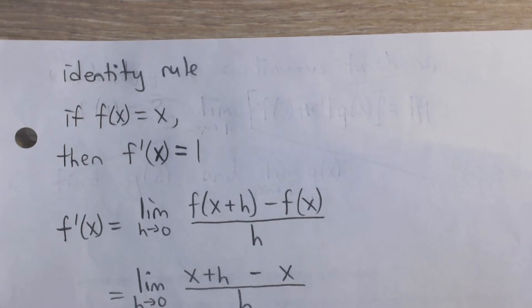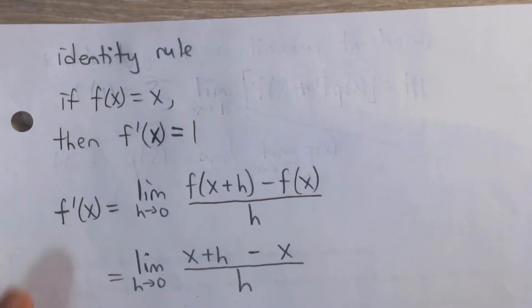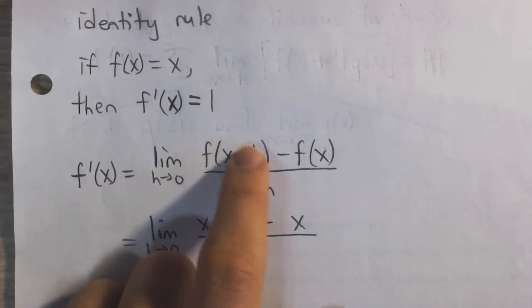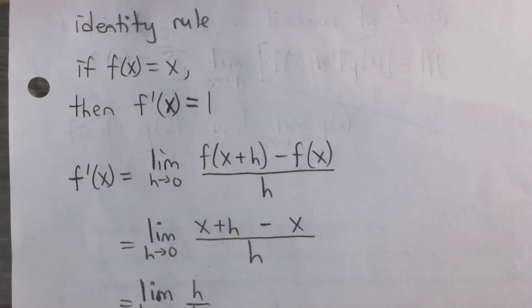But let's take a look at this using the limit definition of derivative. So if we have f of x equals x, then what's the derivative of that? Well, it's the limit as h approaches 0 of f of x plus h minus f of x, all divided by h.